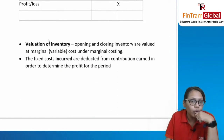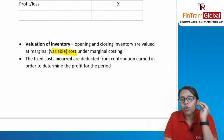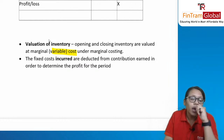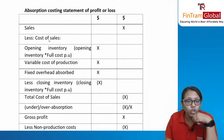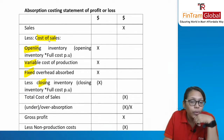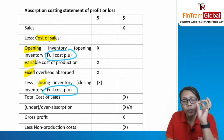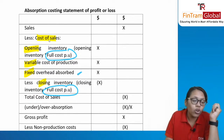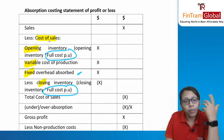In marginal costing, opening and closing inventories are valued at variable cost only. In absorption costing, inventories are valued at full cost (including fixed overhead). In the absorption costing income statement, cost of sales includes: opening inventory + variable cost of production + fixed cost of production − closing inventory. Fixed overheads absorbed into product cost cause under/over absorption. After deducting cost of sales, you get gross profit; then deduct non-production costs (variable and fixed) to get final profit.